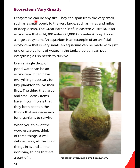Ecosystems vary greatly and can be any size — from the very small, such as a small pond, to the very large, such as miles and miles of deep ocean. The Great Barrier Reef in eastern Australia is an ecosystem that is 14,300 miles long — a very large ecosystem. An aquarium is an example of an artificial ecosystem that is very small; it can be made with just one or two gallons of water, and a person can put everything a fish needs to survive in a tank. Even a single drop of pond water can be an ecosystem, having everything necessary for tiny plankton to live their lives. What large and small ecosystems have in common is that they both contain the things necessary for organisms to survive.